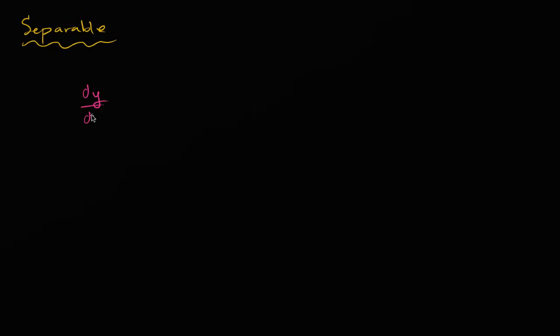We will see in a second why it is called a separable differential equation. So let's say that we have the derivative of y with respect to x is equal to negative x over y times e to the x squared. We have this differential equation, and we want to find the particular solution that goes through the point zero comma one.